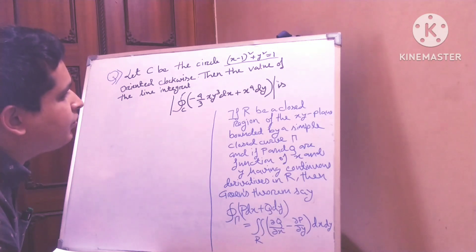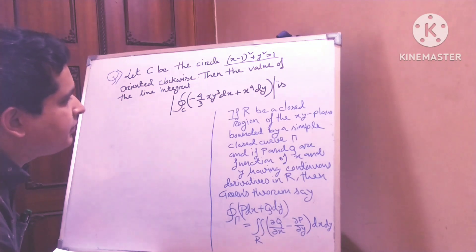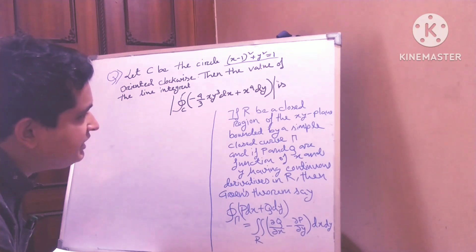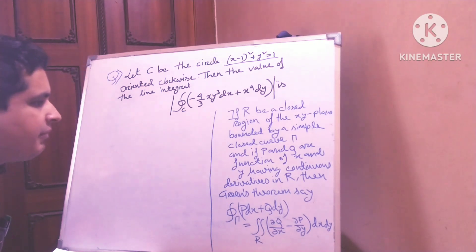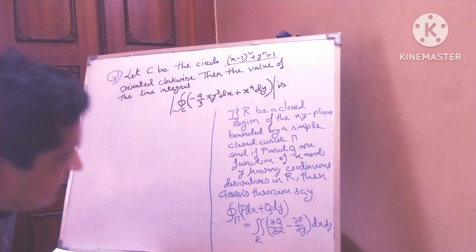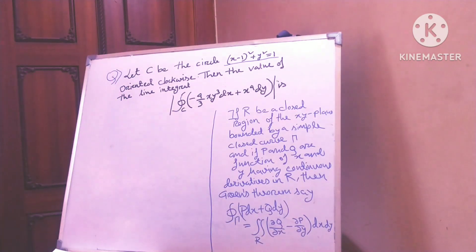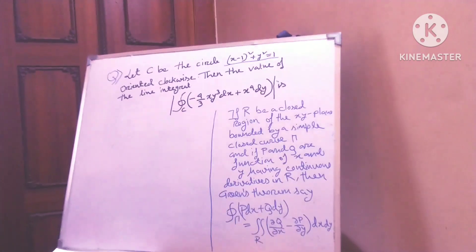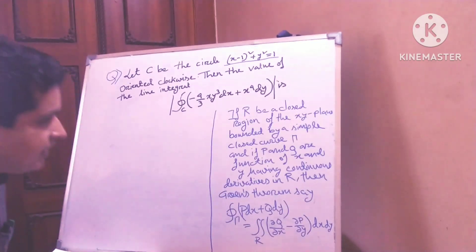If R is a closed region of the xy-plane bounded by a simple closed curve gamma, and if P and Q are functions of x and y having continuous derivatives in R, then by Green's Theorem: closed integral of P dx plus Q dy equals double integral of (del Q / del x minus del P / del y).